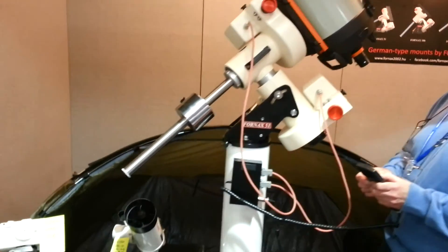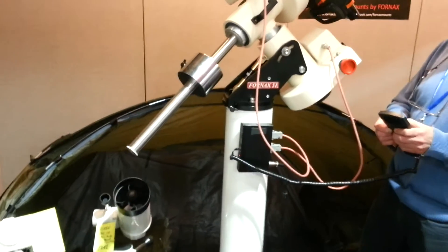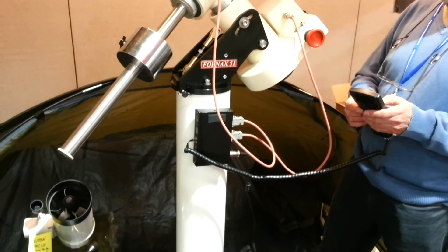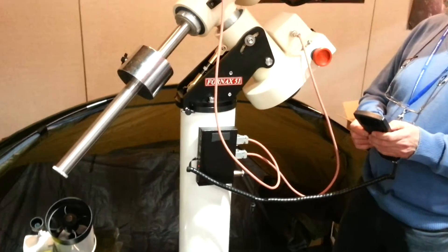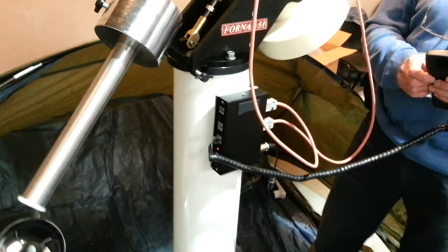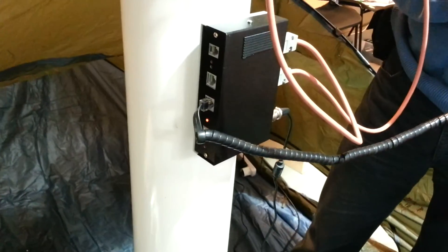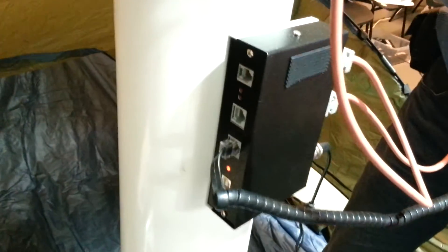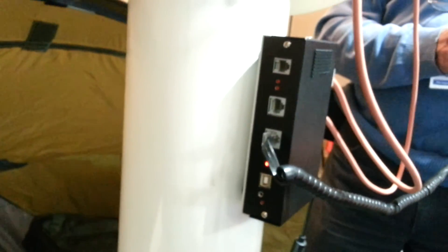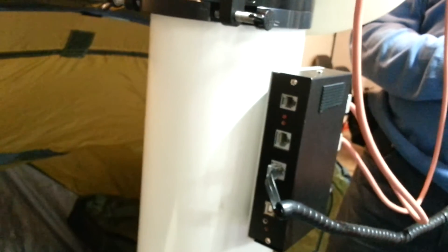And as you can see, my colleague is using a Skywatcher hand control unit to move it, which is being attached to an MC3 control box. It has various connections like USB and auto-guiding ports.